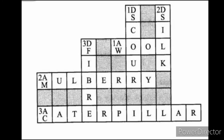Crossword answers — Down: 1D. Scour. 2D. Silk. 3D. Fiber. Across: 1A. Wool. 2A. Mulberry. 3A. Caterpillar.